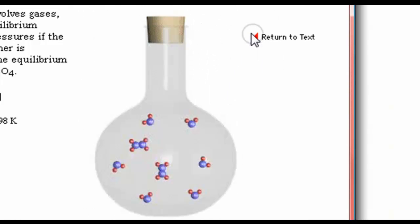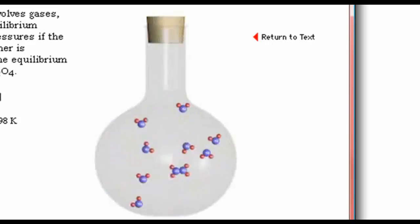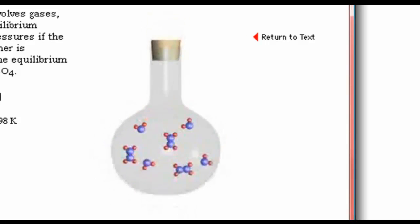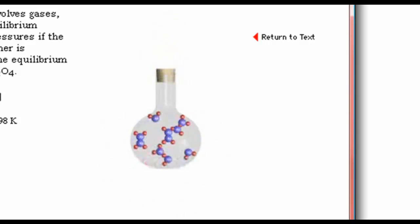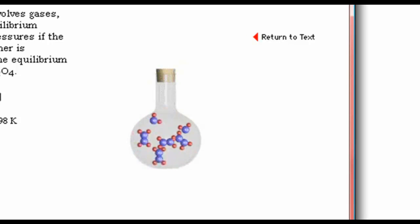A sealed flask contains three molecules of nitrogen dioxide for every one of dinitrogen tetroxide, and the system is at equilibrium. If we then transfer the mixture to a flask with a smaller volume, NO2 molecules convert to N2O4 molecules, resulting in a net decrease in the number of molecules. In this way, the system compensates for the decrease in volume by a decrease in gas pressure.